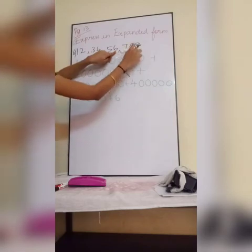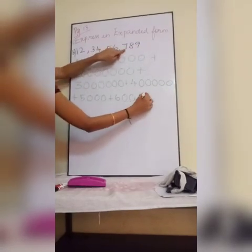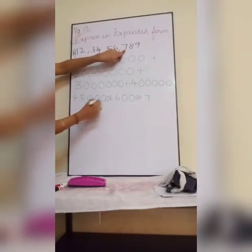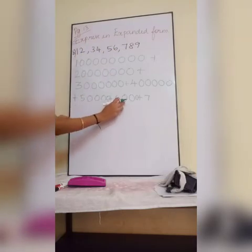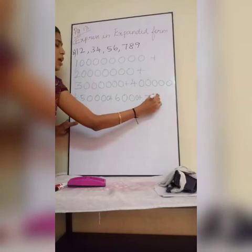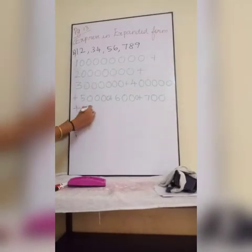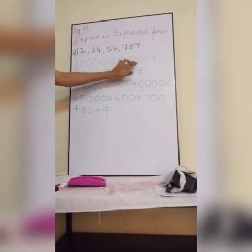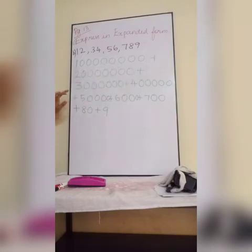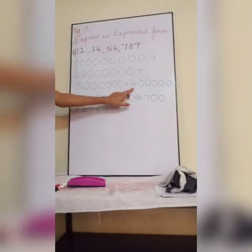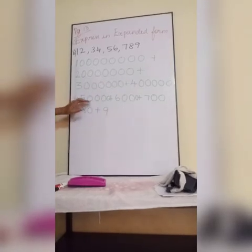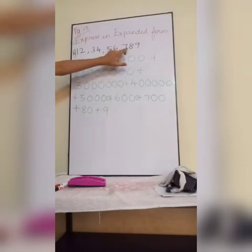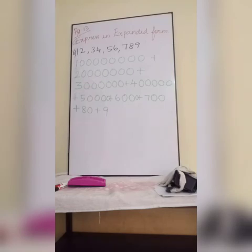Plus 6, 3 zeros — 1, 2, 3. Plus 7, then 4 with 4 zeros, here 6 with 3 zeros. Plus 7, 2 zeros. Plus 8, 1 zero. Plus 9. So: 1 wrote 8 zeros, plus 2 seven zeros, plus 3 six zeros, plus 4 five zeros, plus 5 four zeros, plus 6 three zeros, plus 7 two zeros, plus 8 one zero, plus 9. Understood the expanded form?